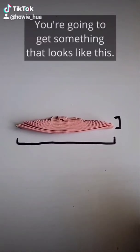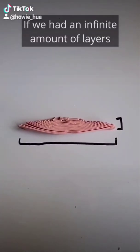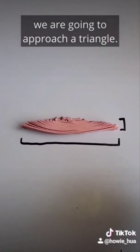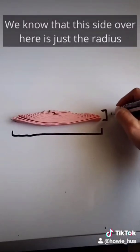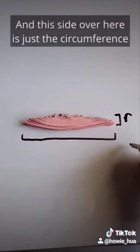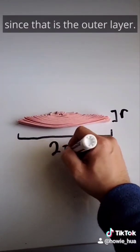You're going to get something that looks like this. If we had an infinite amount of layers, we are going to approach a triangle. We know that this side over here is just the radius because we cut until we hit the center. And this side over here is just the circumference since that is the outer layer.